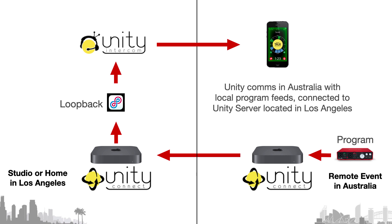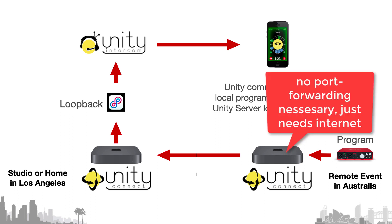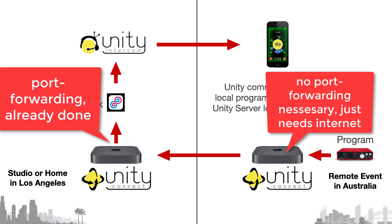And people back in the studio in Los Angeles, or at their houses, or anywhere else in the world, are also going to have that local event audio as well as being on comms. This is kind of the secret sauce behind making Unity Intercom really powerful and simple, because there's no special port forwarding or special considerations for any of our team at this remote event in Australia. All they needed was internet and a Mac computer.